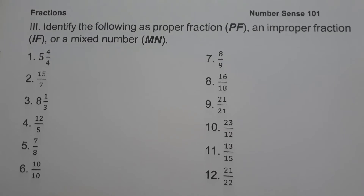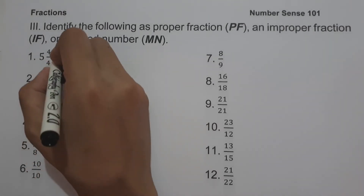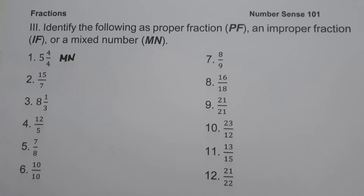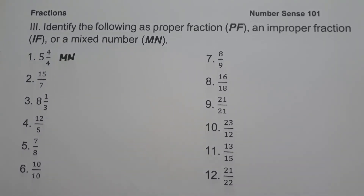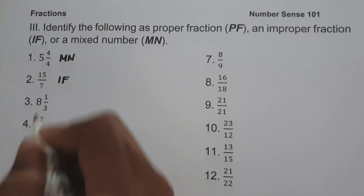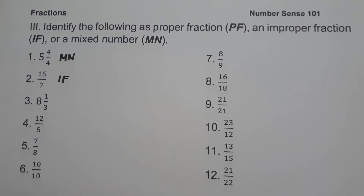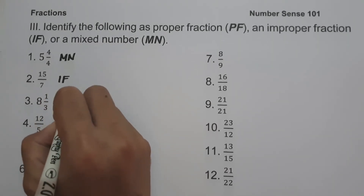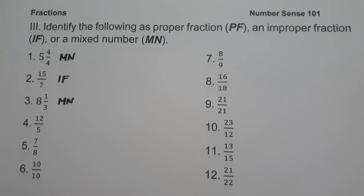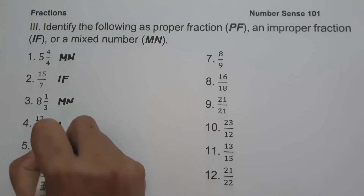On the third set of examples, we are going to identify the following as proper fraction, improper fraction, or mixed number. Number 1: 5 and 4 over 4 — since we have a whole number and a fraction, this is a mixed number. Number 2: 15 over 7 — this is an improper fraction because the numerator is greater than the denominator. Number 3: 8 and 1 third — since we have a combination of a whole number and a fraction, this is a mixed number. Number 4: 12 over 5 — since the numerator is greater than the denominator, this is an improper fraction.